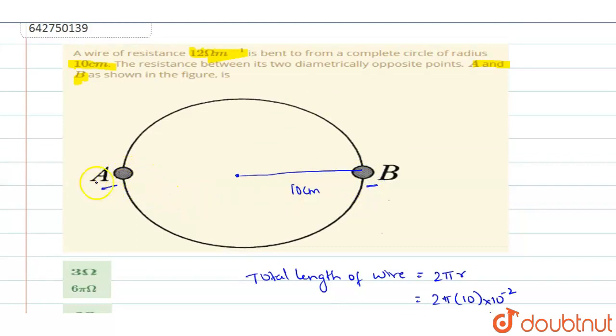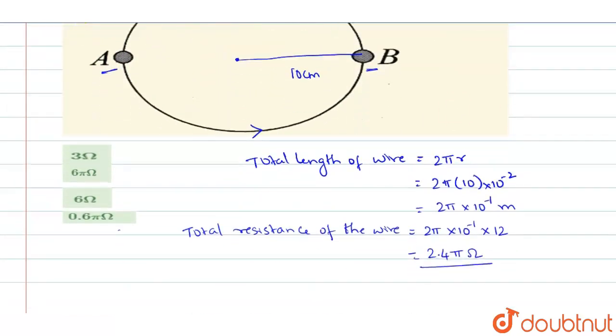So A and B means this whole wire you are now treating that it is divided into 2 halves. A to B along this direction is 1 and A to B along this angle is 1. So these two are exactly divided into 2 halves.